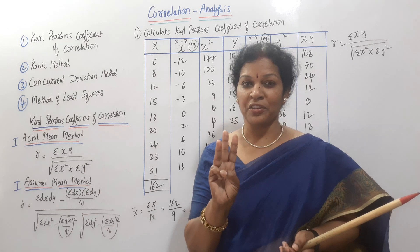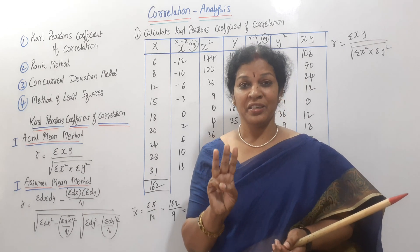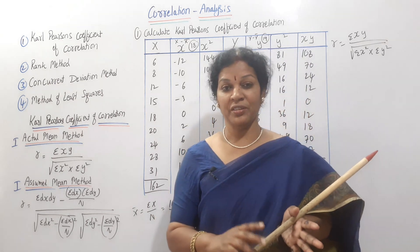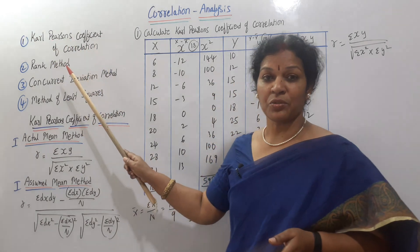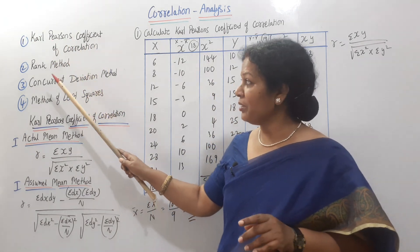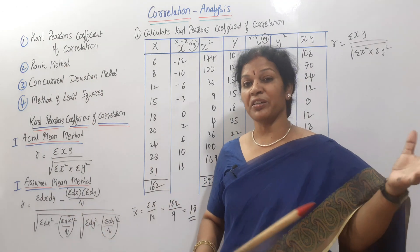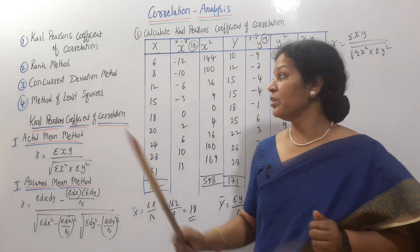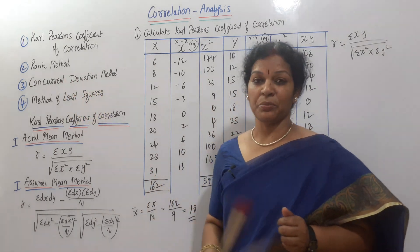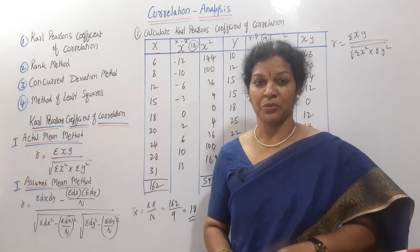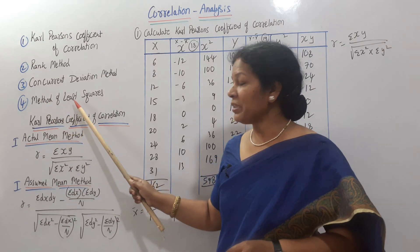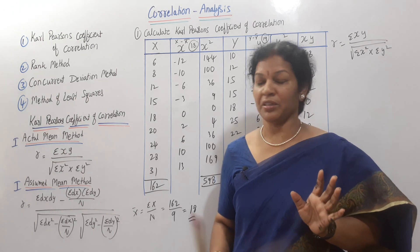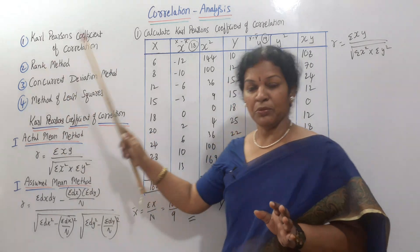Now we move to correlation. Carl Pearson's method is a widely used correlation method. This is Carl Pearson's coefficient of correlation. The second method is the rank method. The third method is another correlation method.